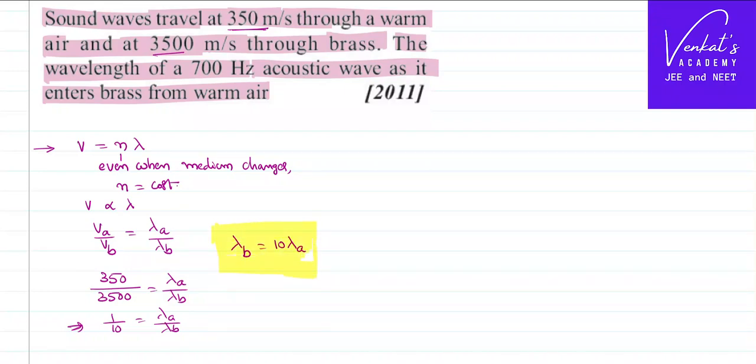That's how the wavelength changes - the wavelength in brass becomes 10 times the wavelength in air. The important thing during all this discussion is that frequency is constant and depends on the source of sound, but not on the medium of propagation.